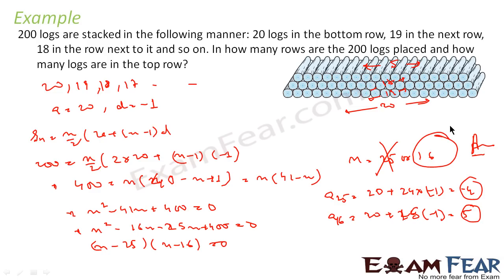So what we have done here: we saw that the number of logs is 20, 19, 18, 17, and so on. This is nothing but an AP where first term is 20 and the common difference is minus 1. We found the total terms, we got a quadratic equation, we solved it, we got n = 25 or 16, and then we found that 25 is not possible, so n = 16.